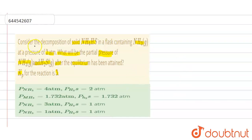Hello everyone. The question is: consider the decomposition of solid NH4HS in a flask containing NH3 at a pressure of 2 atm. What will be the partial pressure of ammonia gas and H2S gas after equilibrium has been attained? Kp for the reaction is 3.